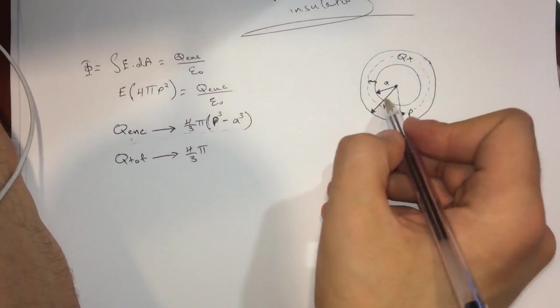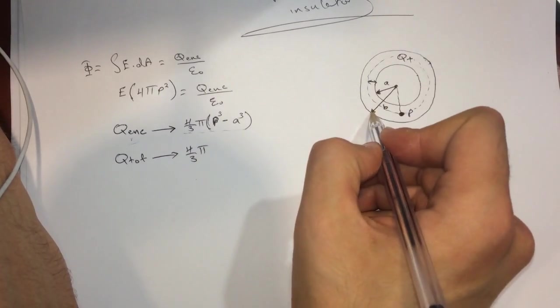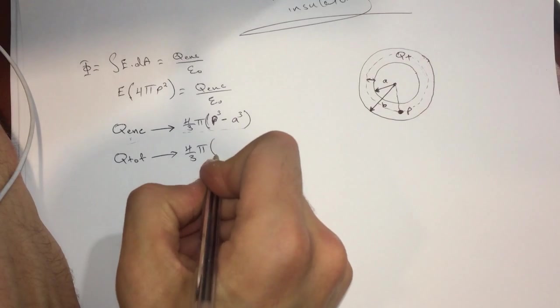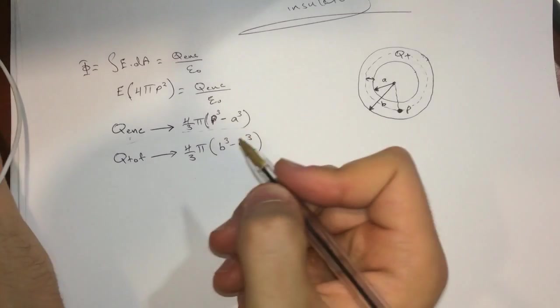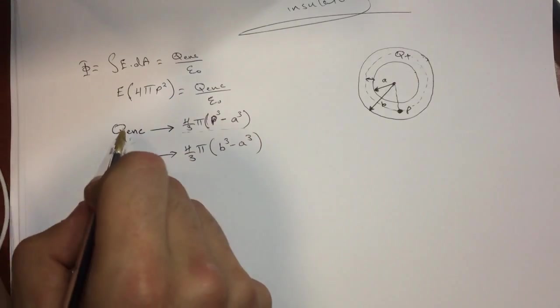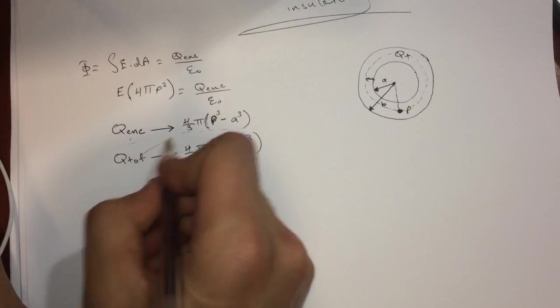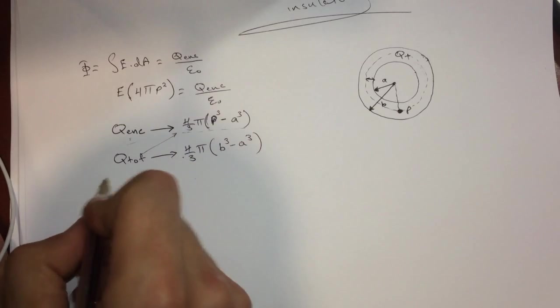And then for the Q total will be equal to 4 over 3 π, and then the Q total is between B and A, right? So it's between B³ minus A³. Now we want the Q enclosed, so we're just multiplying this times this divided by this.